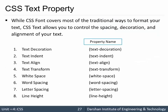Next are CSS text properties. We can specify properties like text-decoration, text-indent, text-align, text-transform, white-space, word-spacing, letter-spacing, and line-height. There is a difference between font properties and text properties — font properties deal with size and boldness, whereas text properties deal with alignment, indentation, spacing between words or letters, and line height.